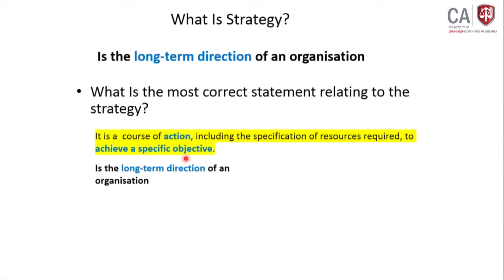You have to remember in the examination: sometimes they will question about what are the three things of strategic management. You can say: course of action, resources required, and specific objectives. Those are the three things. In some questions, they have directly asked what is a course of action including the specification of resources required to achieve a specific objective. It is a long-term direction of an organization — not short-term, but long-term.